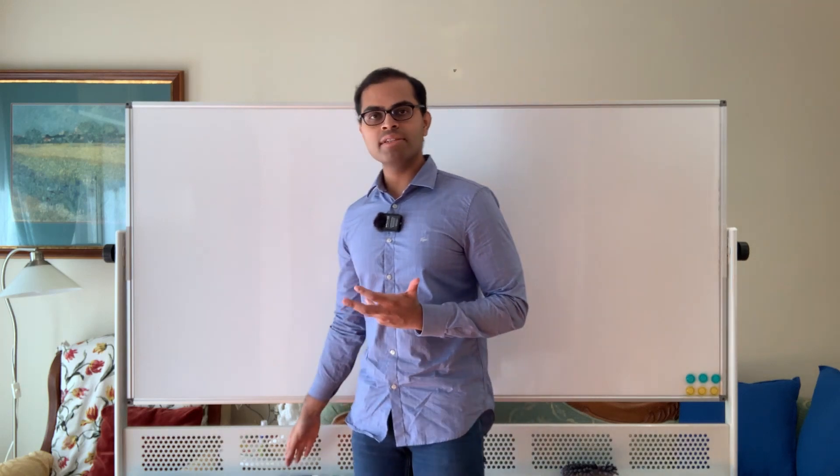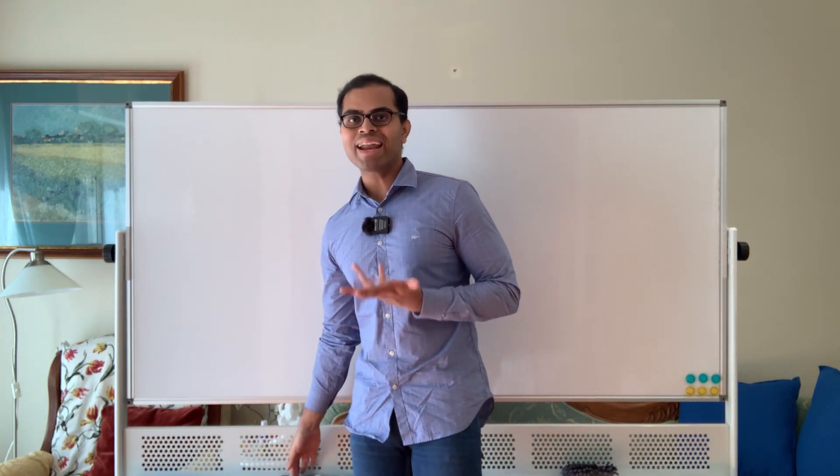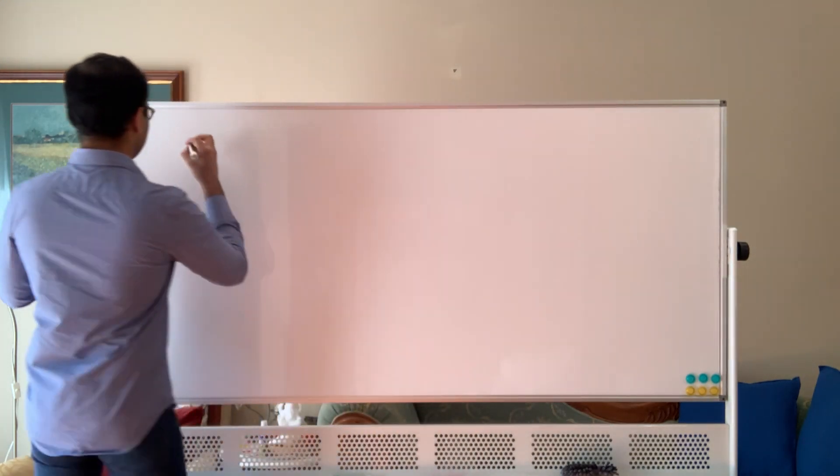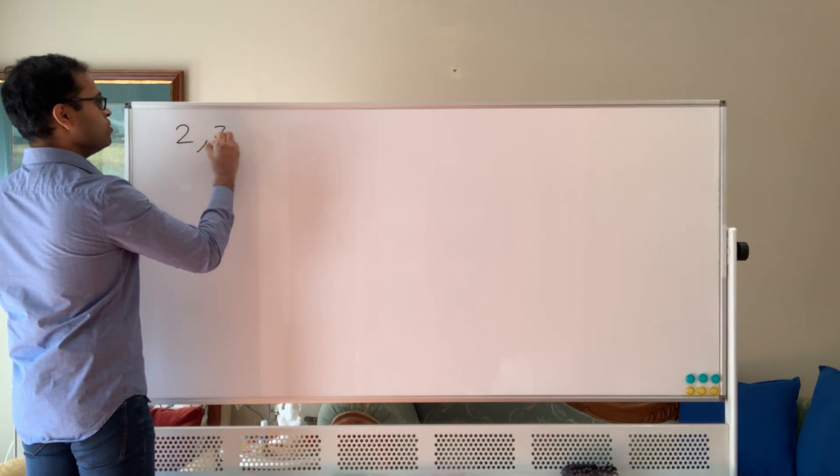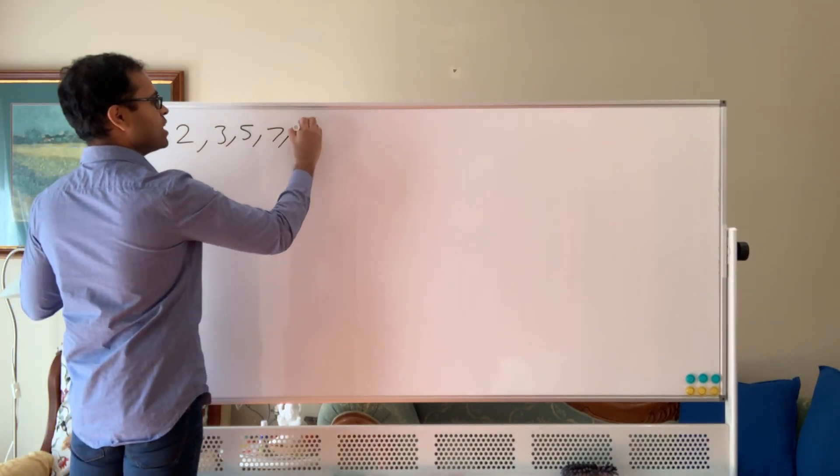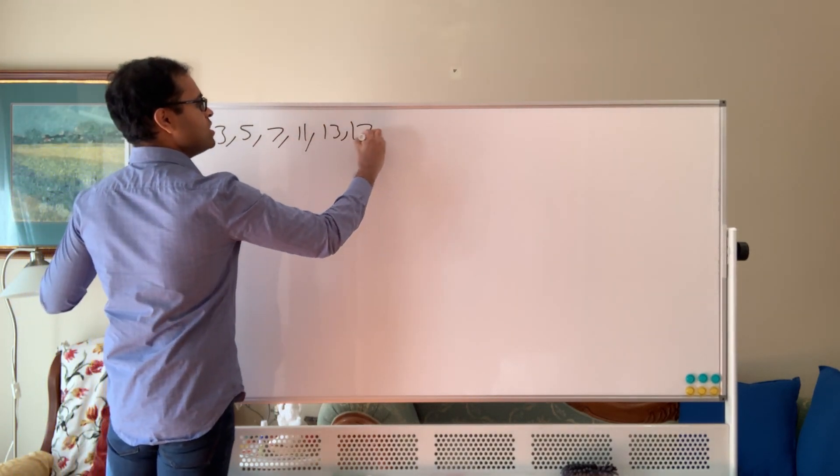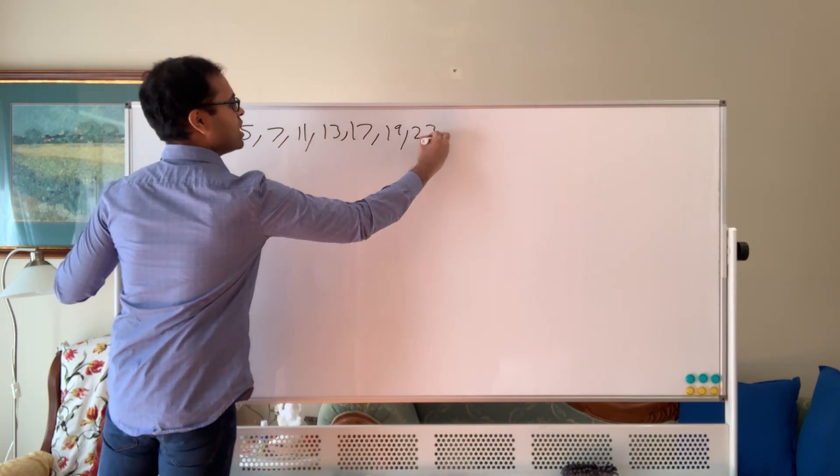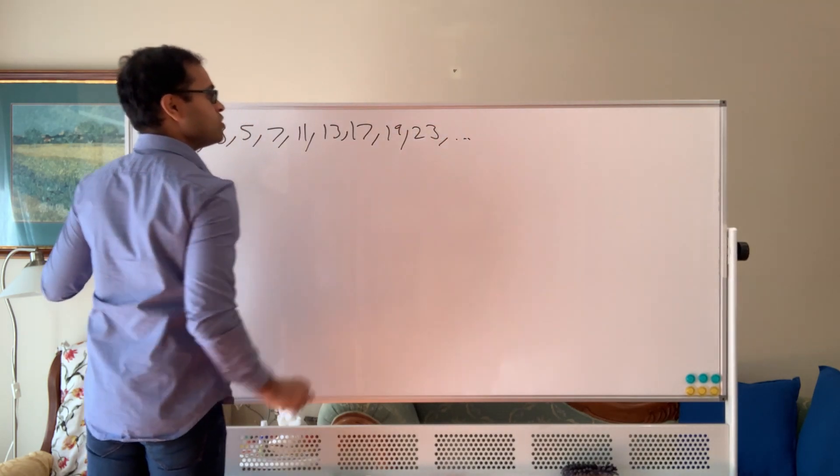A prime number is a number that is only divisible by one and itself. So for example, you can start writing out the primes: 2, 3, 5, 7, 11, 13, 17, 19, 23, etc. These numbers don't have any factors other than one and themselves.